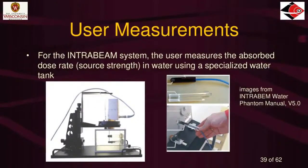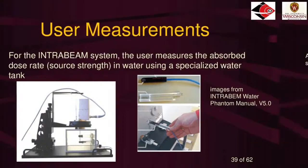For the Zeiss IntraBeam system, they don't include a well chamber. You have the option to buy a water tank — most users do — and place a parallel plate chamber inside to measure dose rate in water using the formalism I showed earlier. This is a very different way to measure the output of these sources. The water tank holds the sources and chambers very precisely because the chamber must be positioned very accurately so close to the source.